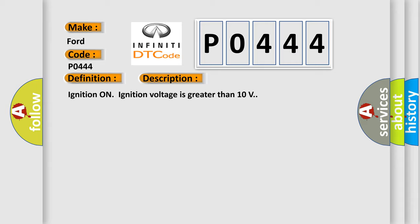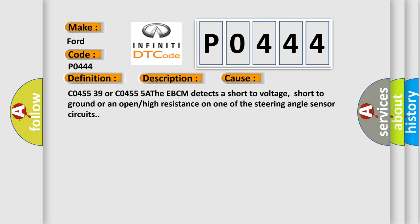This diagnostic error occurs most often in these cases: C0455 39 or C0455 5A. The EBCM detects a short to voltage, short to ground, or an open or high resistance on one of the steering angle sensor circuits.